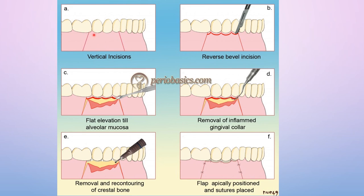For apically displaced flap, if the flap needs to be moved apically, vertical releasing incisions are given for flap movement. After elevation and tissue removal, osseous contouring can be performed and the root surface is accessible for cleaning. Any bony deformity can be corrected, and then the flap is placed in an apical position and sutured. This increases the zone of attached gingiva at the apical position.